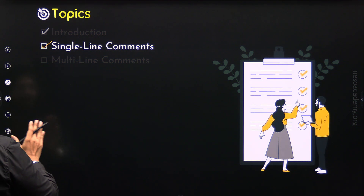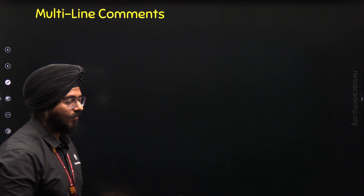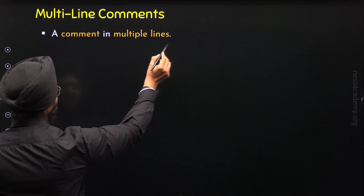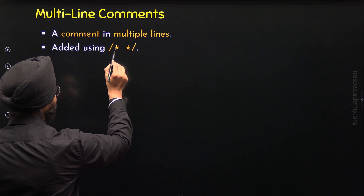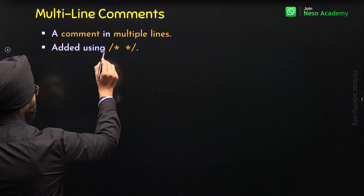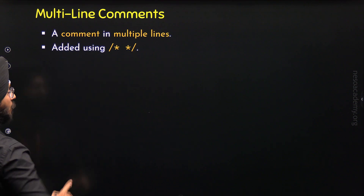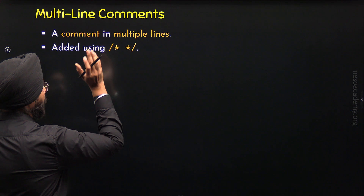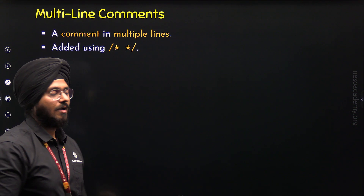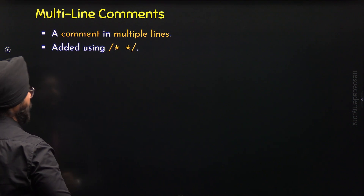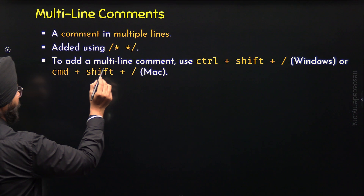Now let's move to the third topic and understand multi-line comments. What is a multi-line comment? A multi-line comment is a comment spanning multiple lines, as the name suggests. A multi-line comment is added with slash asterisk at the beginning and asterisk slash at the end. Whatever is written between these two markers is completely ignored by the compiler. If you do not want to type this manually, you can use the shortcut Ctrl+Shift+Forward Slash on Windows, or Command+Shift+Forward Slash on Mac.